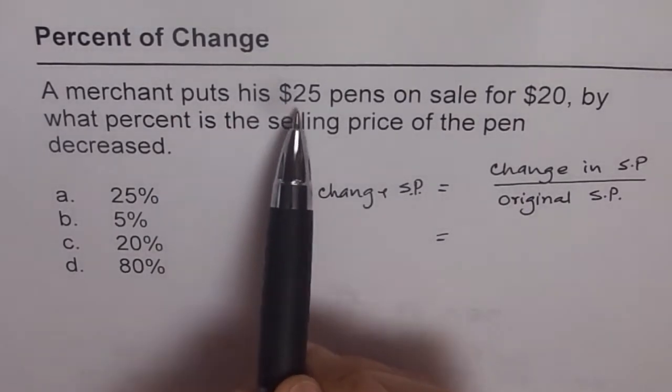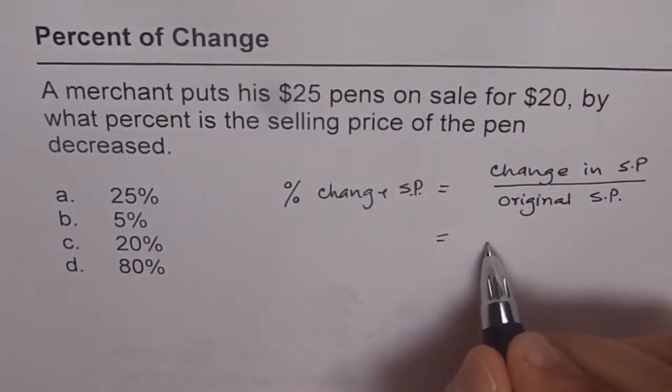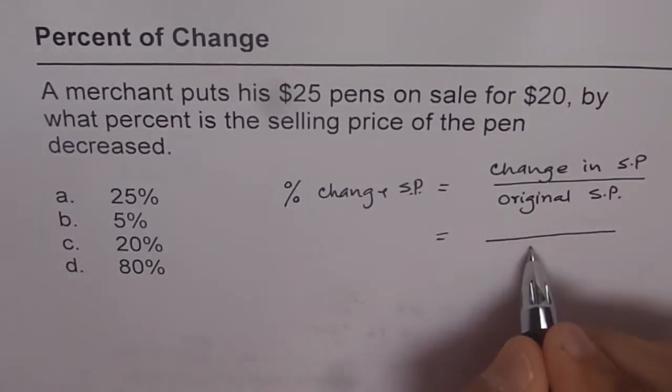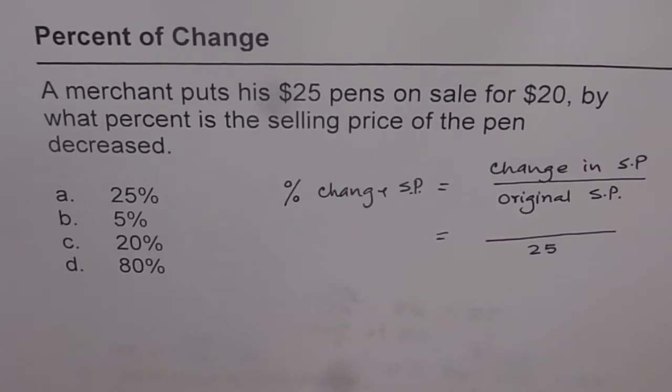So read the question. A merchant puts his $25 pens on sale. So the original price is $25. So without mistake, let's put 25 in the denominator. Do you understand?